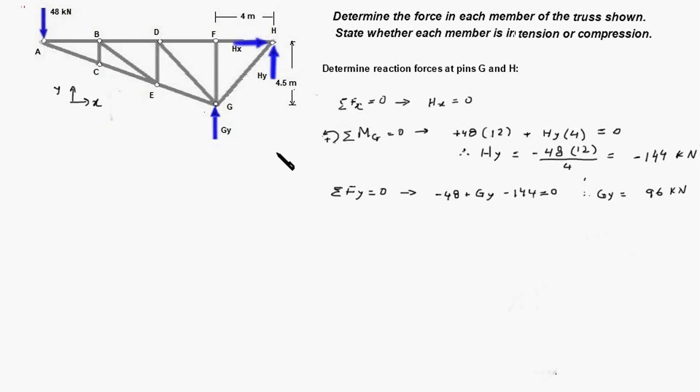Next we take the moment of all the forces about point G and the force 48 kN acting at A has a moment of 48 times 12. 12 m is the distance between A and F plus HY times 4 and that gives us HY equal to minus 144 kN.